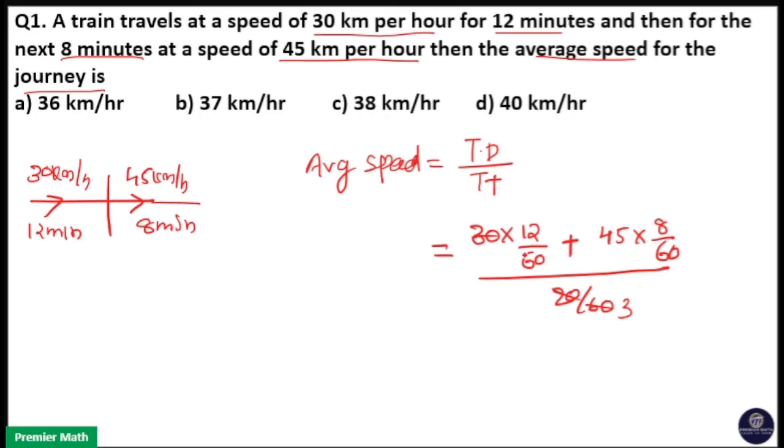20 into 3, 60. 30 into 2, 60. 15 into 3. 45, 15 into 4, 60. So this will be 12 by 2, 6. 8 by 4, 2.